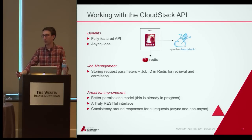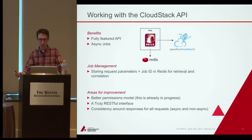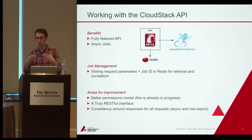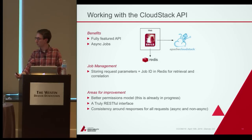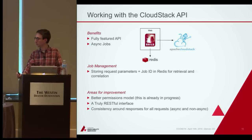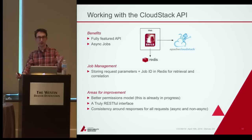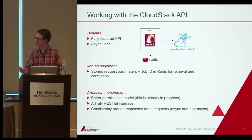Some areas we've been eyeing for improvement: a better permissions model — which is already in progress — a truly RESTful interface to the API, and more consistency around requests and responses. For example, when you list SSH key pairs, the request says 'sshkeypairs' but the response says 'sshkeypair' — singular. Small things, but unexpected when you first start using it.